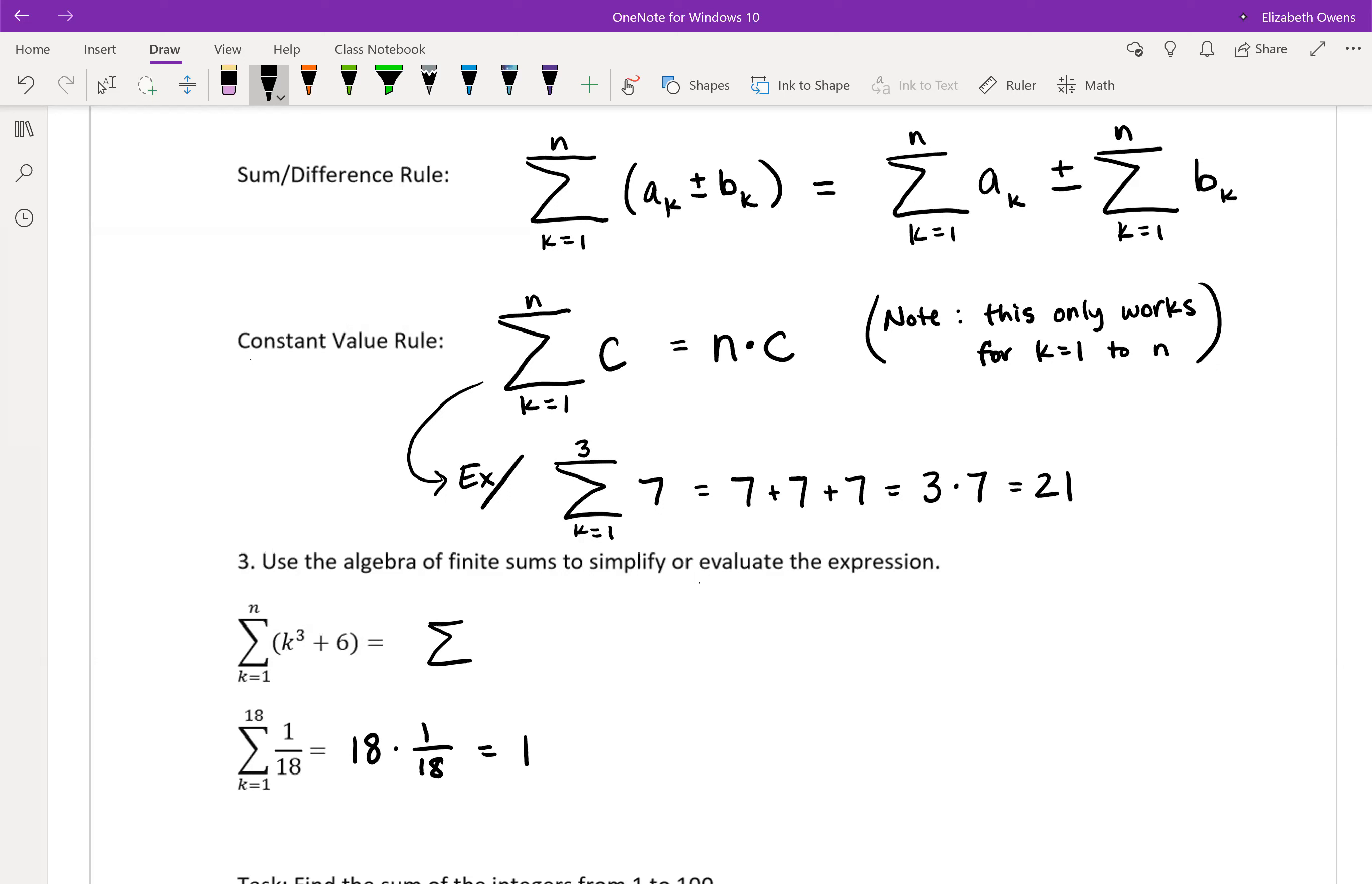Take our summation k equals 1 to n of k cubed, and then add a summation k equals 1 to n of 6. And then you got the second part there as well.